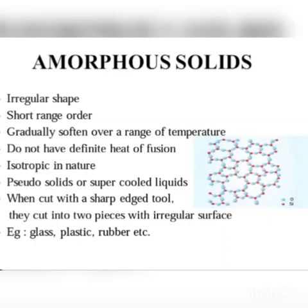Amorphous solids have short range order. In long range order, the pattern repeats throughout the entire crystal. In amorphous solids, only short range order exists — the regular arrangement does not repeat throughout.